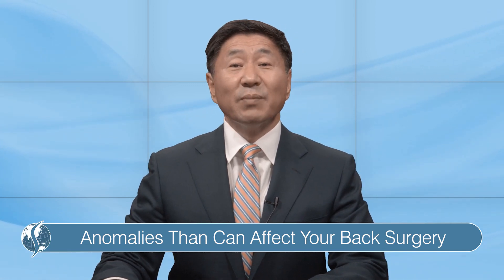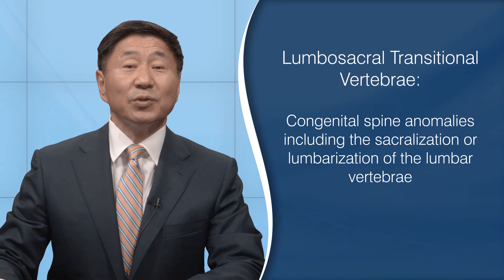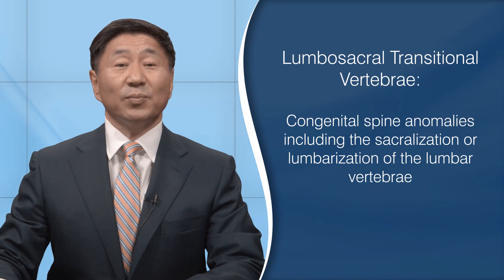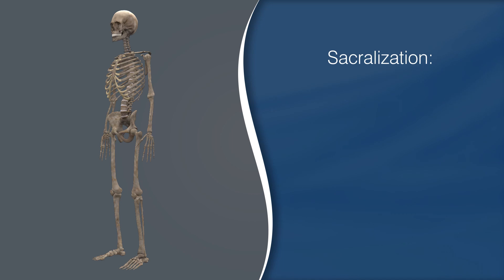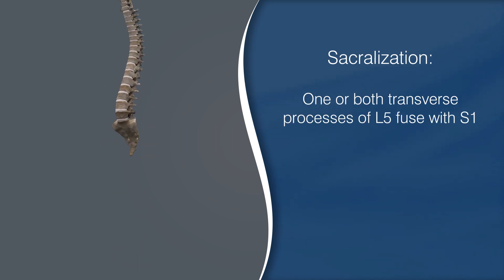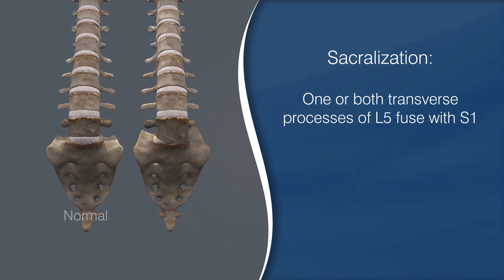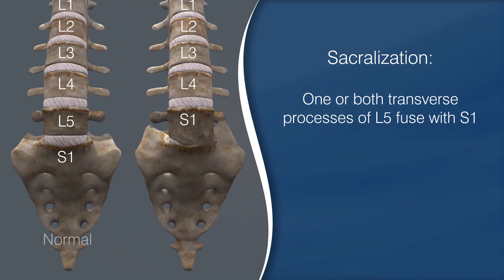One of the most common variants is the presence of a missing or an extra lumbar bone. This condition is called a lumbar sacral transitional vertebra. In the former scenario, we refer to it as sacralization of the lumbar vertebra. The last open disc level is the L4-S1 level instead of the more common L5-S1 level — in other words, there are only four lumbar vertebrae.